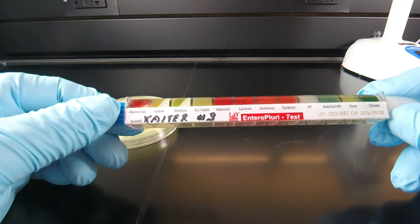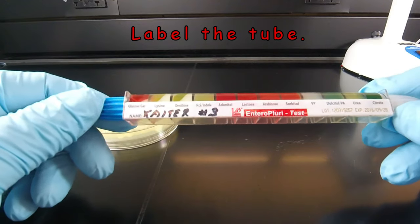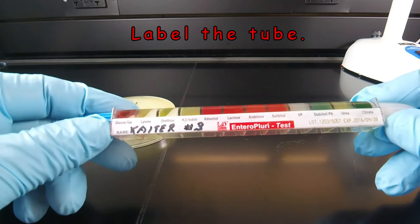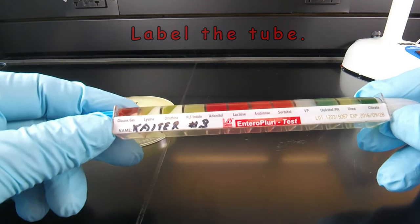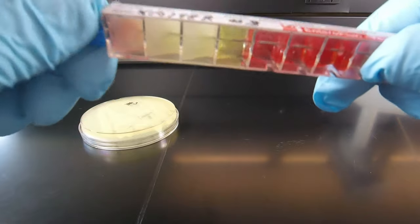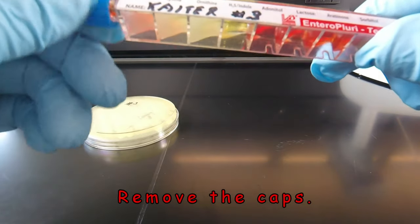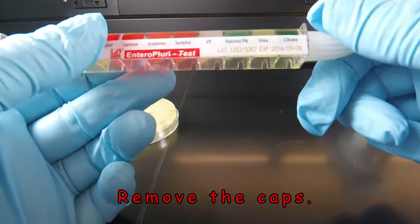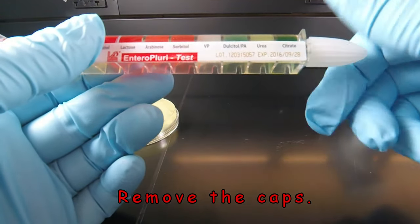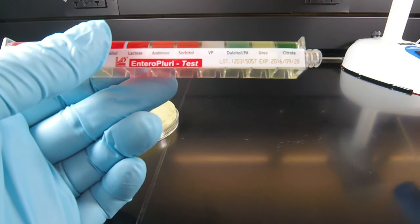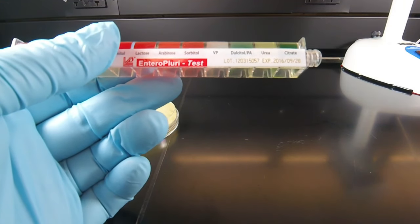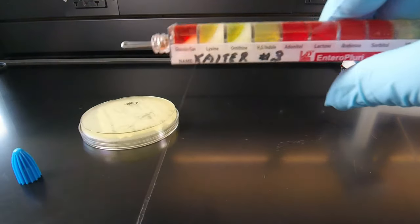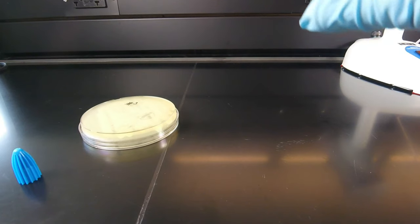The first thing we need to do is label the Entrapluri test with your names and your unknown number. To inoculate the Entrapluri test, remove the two caps on the ends by turning them counter-clockwise. Don't touch anything underneath the cap. You'll notice that one end has a straight wire, that's the inoculating tip, while the other end has a bent wire, and that's the handle for inoculation.